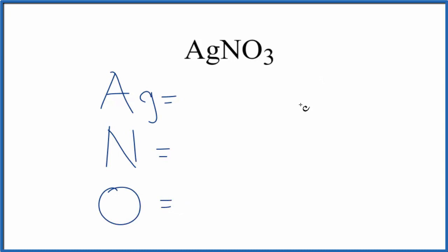For silver, there's nothing written after the Ag, so we assume that subscript is one. We have one silver, same for nitrogen, just one nitrogen, and then three oxygen atoms. So we have a total of five atoms in AgNO3. Sometimes you're asked to figure out the number of atoms, for example how many silver atoms we have in one mole of AgNO3.